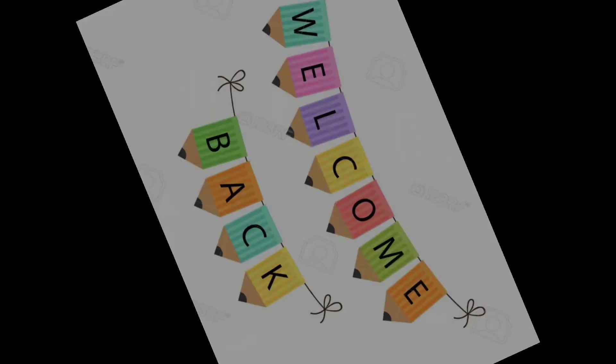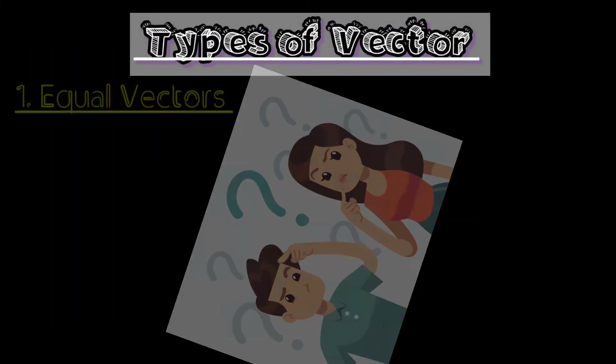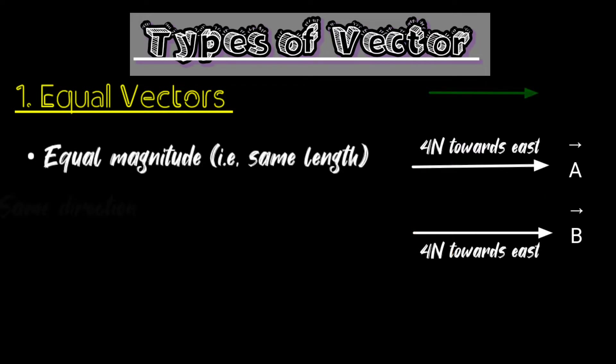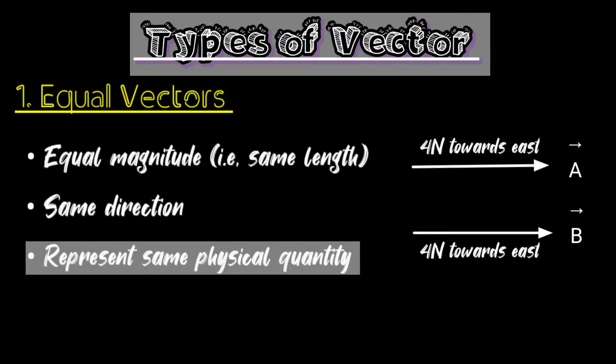Welcome back to our channel. In today's video we are going to discuss two types of vectors. First, we will look at equal vectors. Two vectors A and B are said to be equal when they have equal magnitudes, the same direction, and represent the same physical quantity. Then they are known as equal vectors.